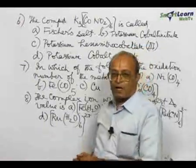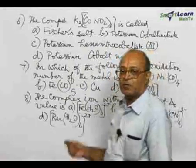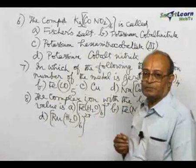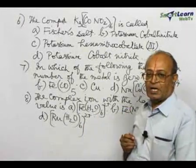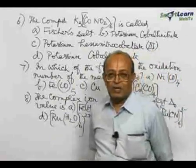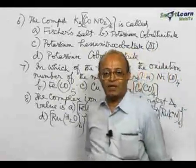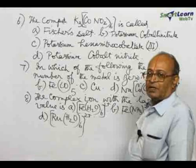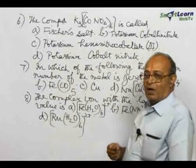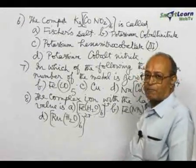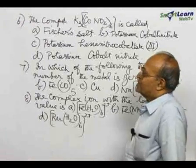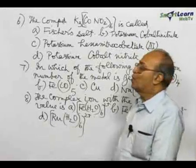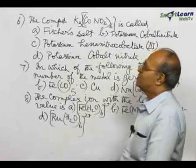Now, first consider question number 6. A complex is given several names, and you have to choose the correct answer or answers. Consider question number 6: K3Co(NO2)6.